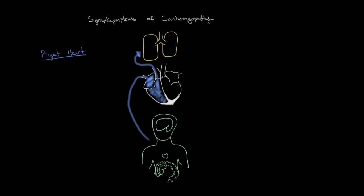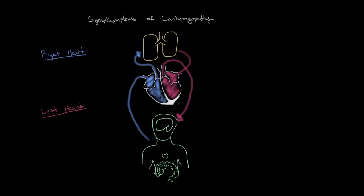Over here on the right side of the diagram, we're going to call this the left heart. After blood is oxygenated in the lungs, it's drawn into the left heart and then pumped out to the body. In the body, oxygen is exchanged as well as nutrients and waste, and then that blood is sent back to the right heart — it just keeps going in a circle like that.